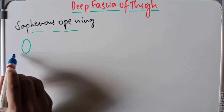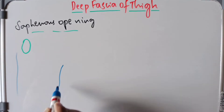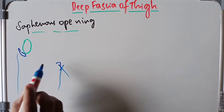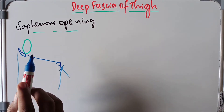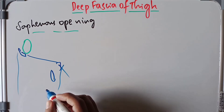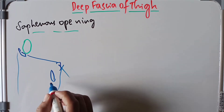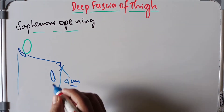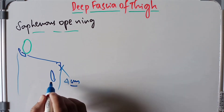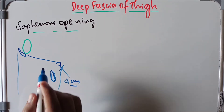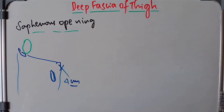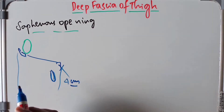When you look at the thigh, with the anterior superior iliac spine and the pubic tubercle and the inguinal ligament, on the upper medial part of the front of the thigh, the center of this opening is almost three to four centimeters lateral to and below the pubic tubercle. It is an oval opening situated in the upper medial part of the thigh, known as the saphenous opening.